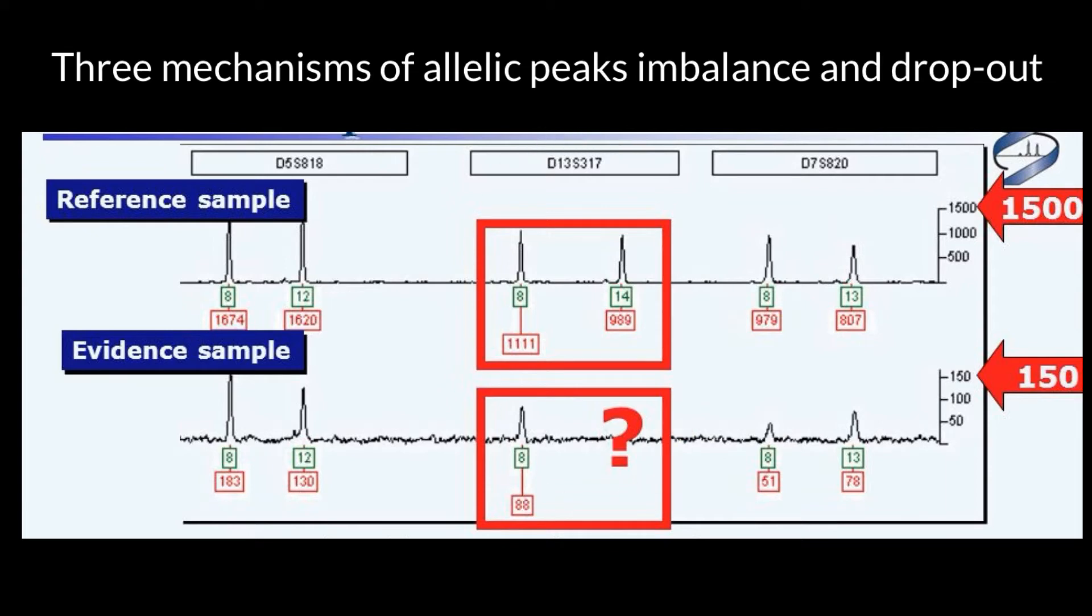But for this locus we have 8 repeats here, 14 repeats here, but only 8 repeats here. And it looks like this person who gave this sample or evidence sample that have been collected at the crime scene is homozygous at this locus. And it has also the same calls for the locus which is D7S820.